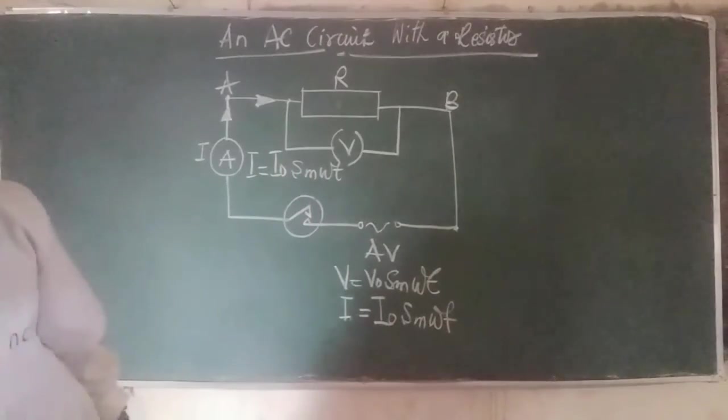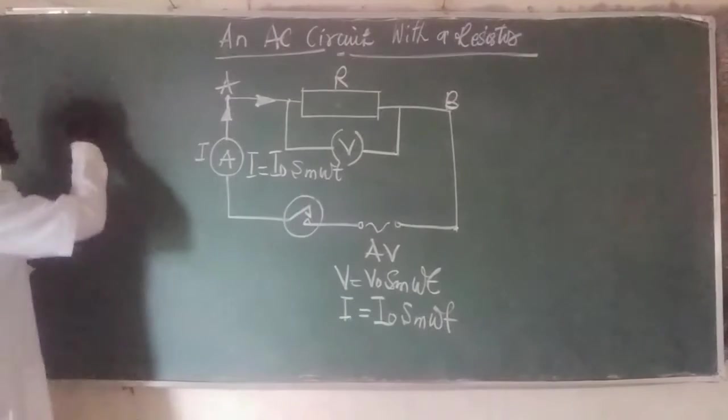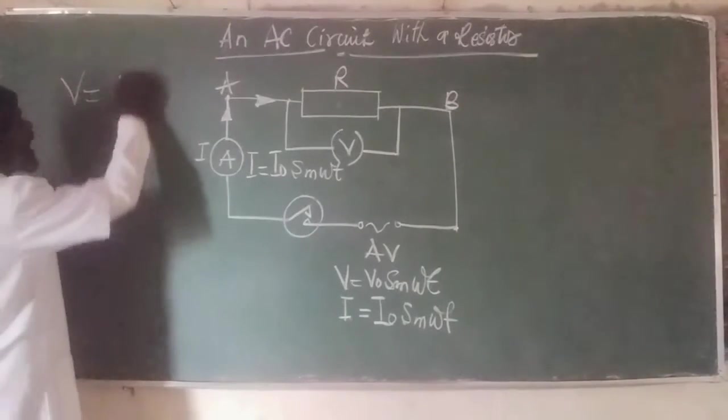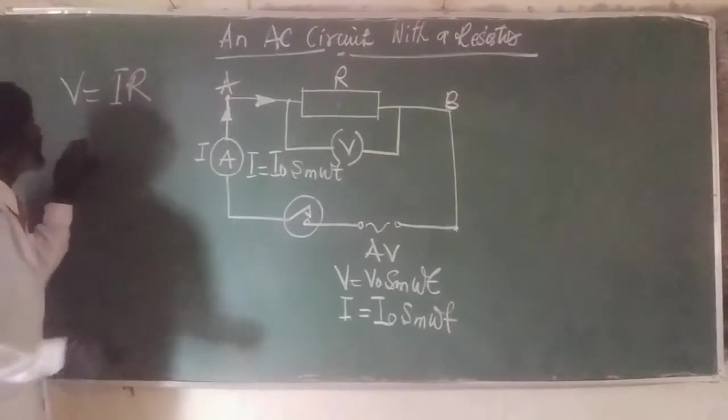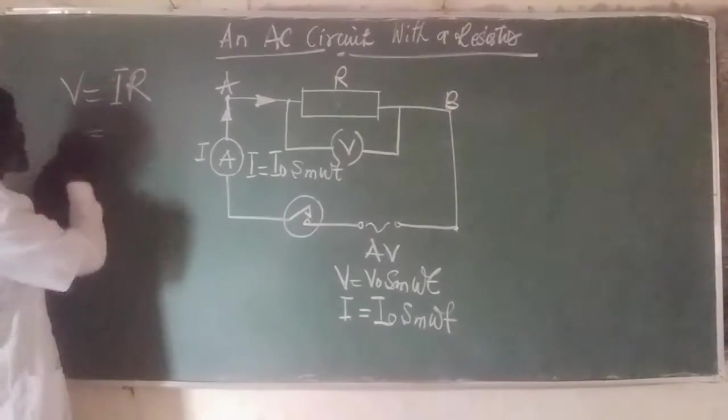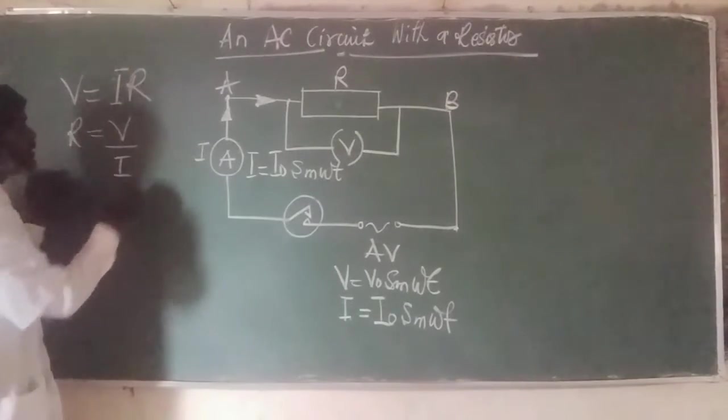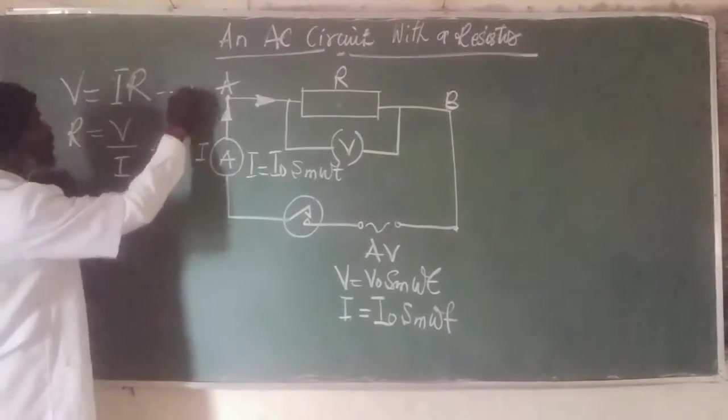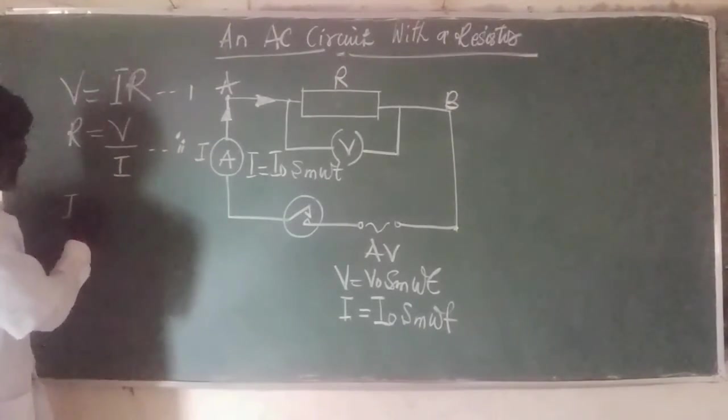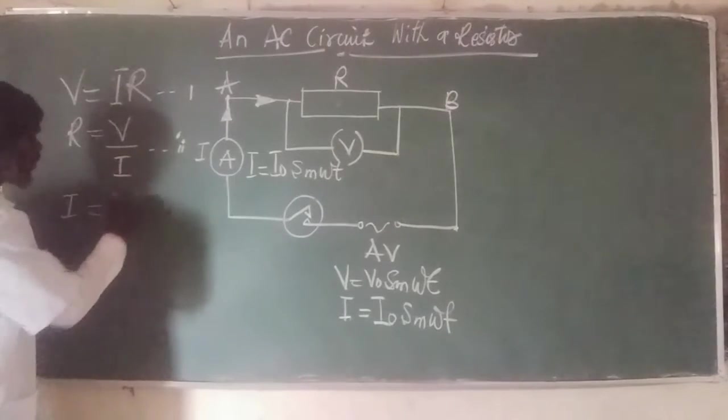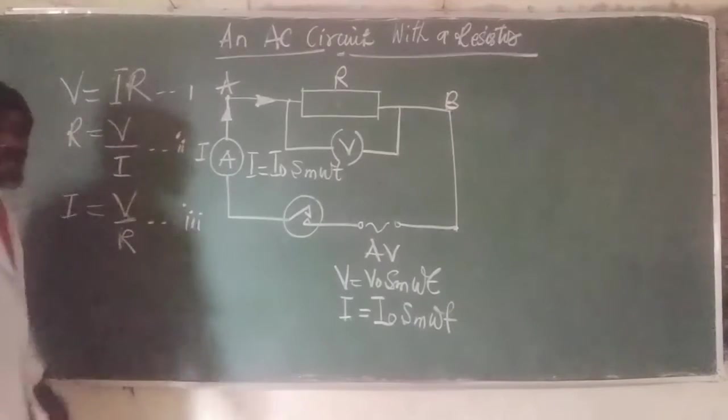What happens is that we are going to state Ohm's law once again, and it makes it very simple for us to do that. We have to state Ohm's law that V equals I R. We know this already. That we are looking for R, it becomes V all over I. We call this equation number one, equation number two. If we are looking for I, we make I the subject, it becomes V all over R. And this becomes equation number three.